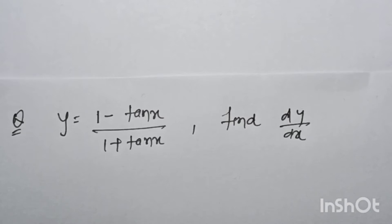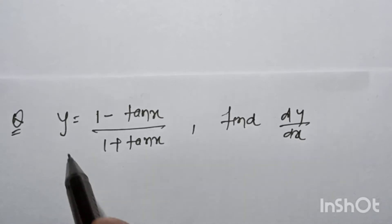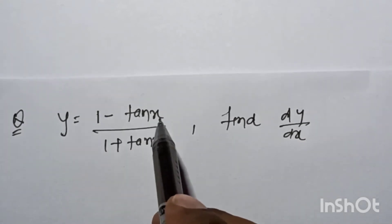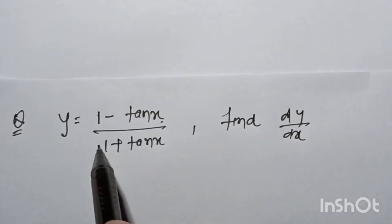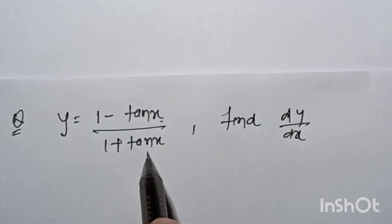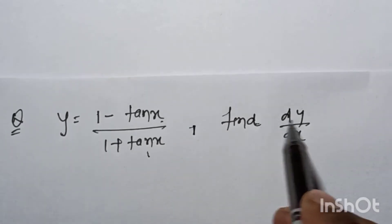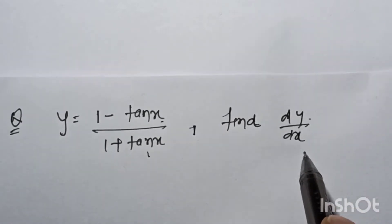Hello friends, welcome to my channel. Today we will discuss a derivative problem. The question given: y is equal to (1 minus tan x) by (1 plus tan x). Find dy by dx.